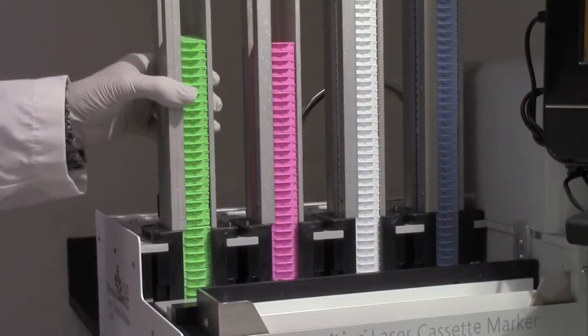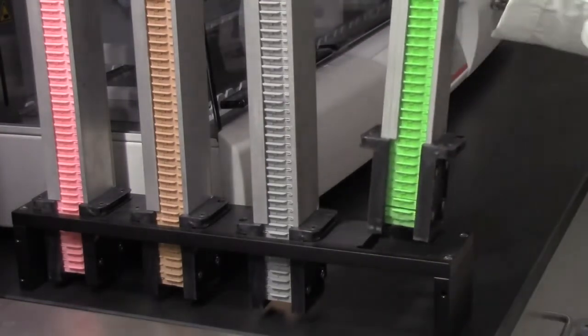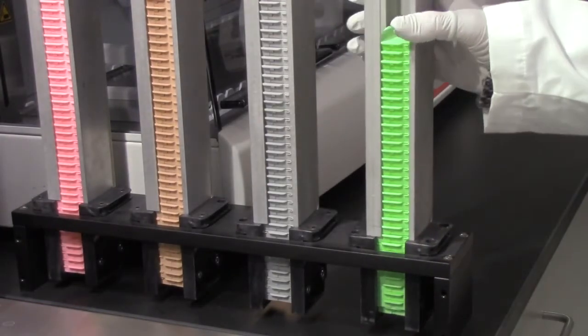Four removable magazines hold up to 70 cassettes each, for a total of 280, and can be easily switched with magazines containing different cassette types or colors.